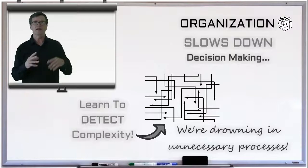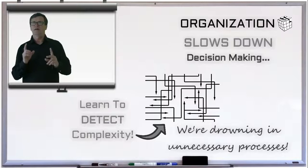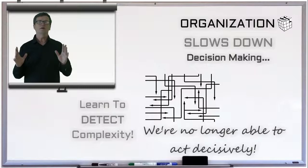What those signals mean is that the processes have become more important than why you're doing them in the first place. And a very dangerous signal of bad complexity is when you hear: we're no longer able to act decisively or precisely.